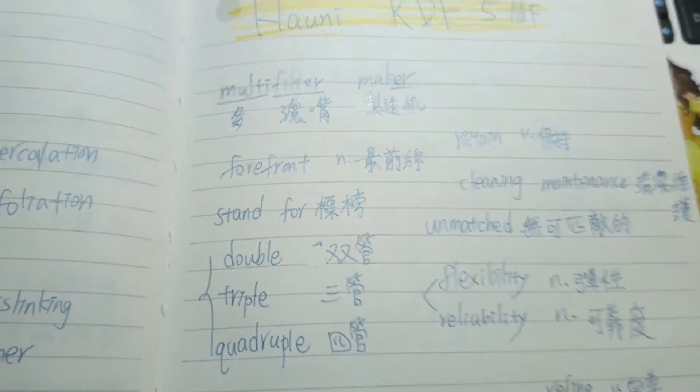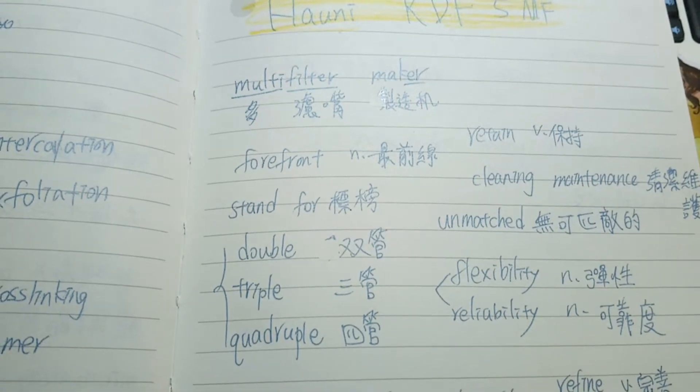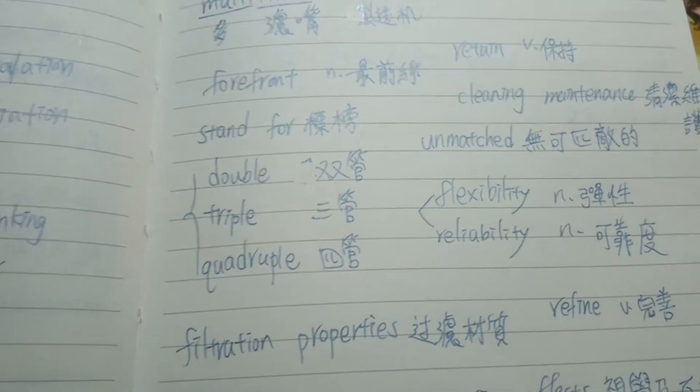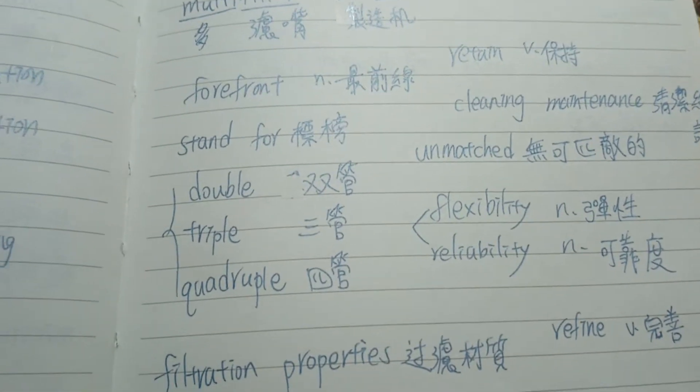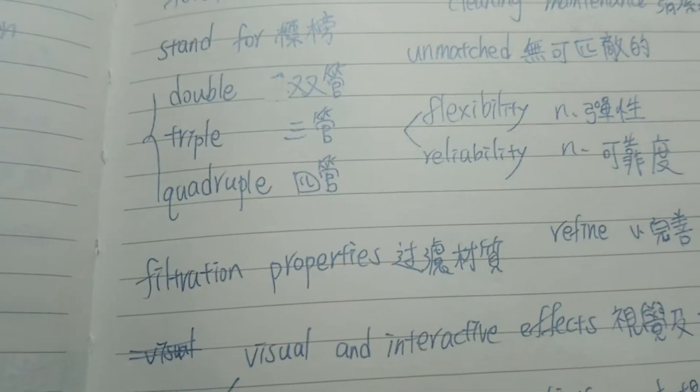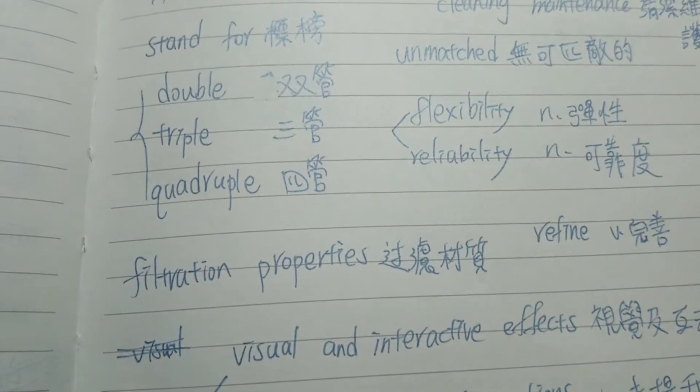It produces double, triple and even quadruple filters with different filtration properties. 它制造双管、三管、四管,然后里面是装有不同的过滤材质filtration properties。